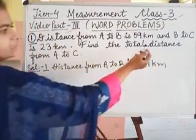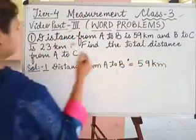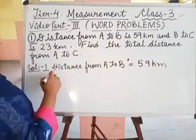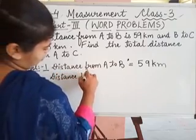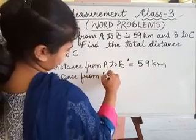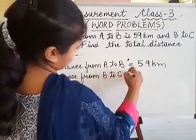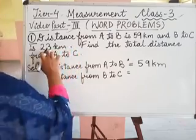Now the next is, from B to C is 23 km. We will make the next statement, distance from B to C, this will be your 23 km.